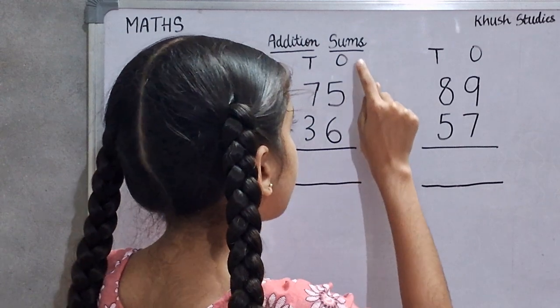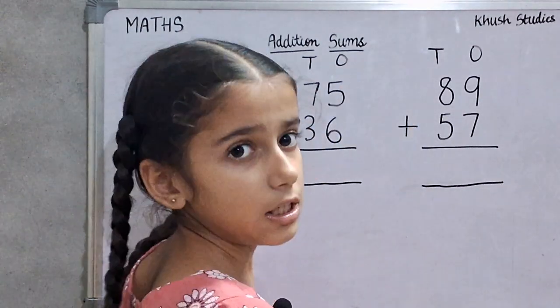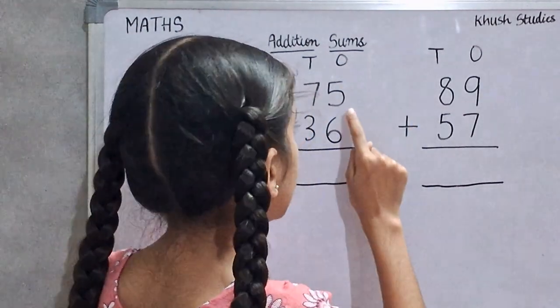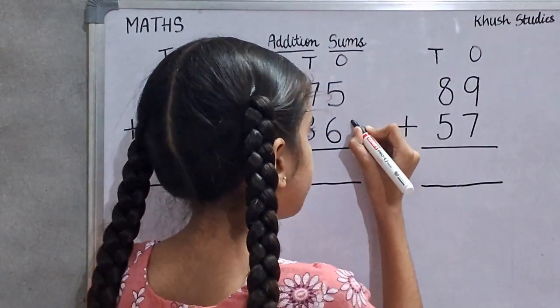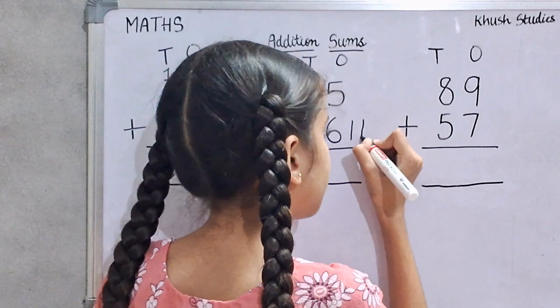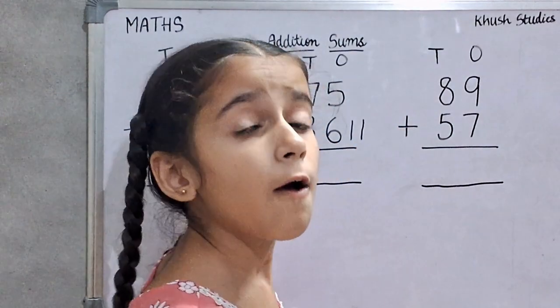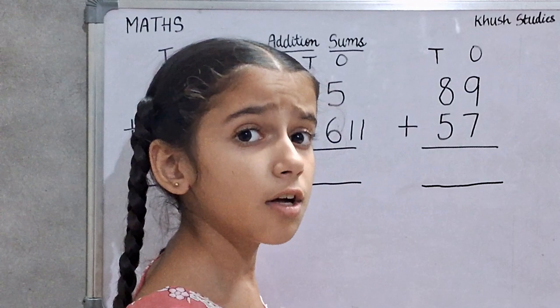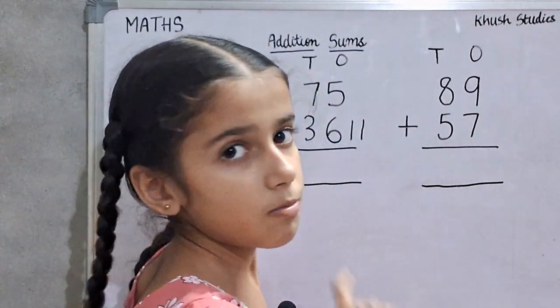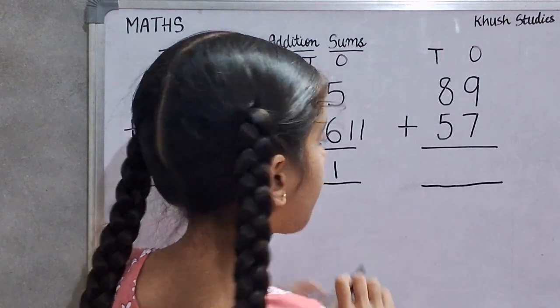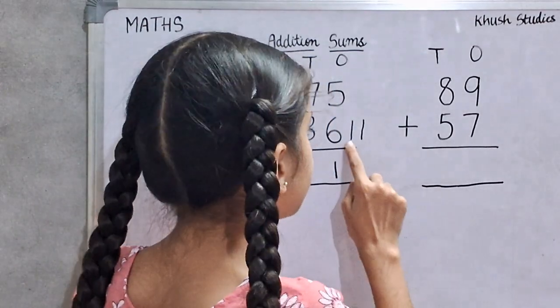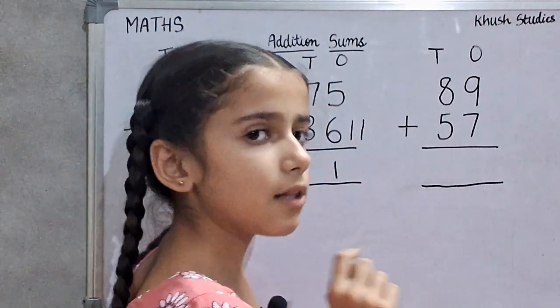We will add ones digit. 5 plus 6 is 11. We will write ones digit 1 in ones place. We will write tens digit 1 in tens place.